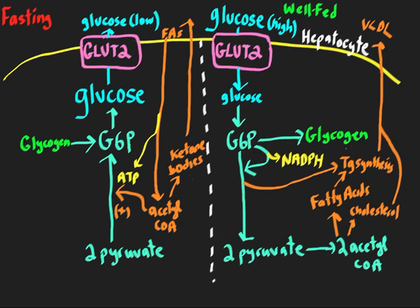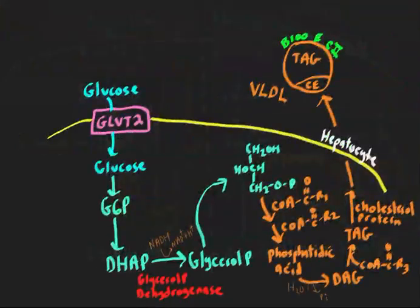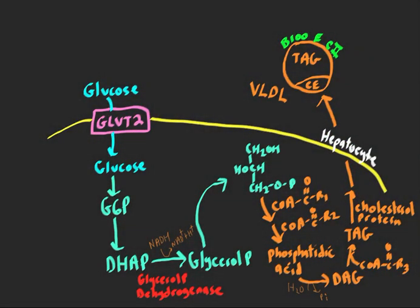Now let's take a look at a little more detail with the well-fed state in the liver. This is the consideration: we have lots of glucose, so we just ate a meal. It's entering the hepatocyte through facilitated diffusion through the GLUT2 transporter. We have our glucose 6-phosphate formed through glucokinase.